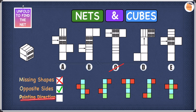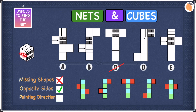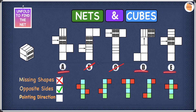In terms of pointing directions, the arrow on the cube is pointing towards the window shape. So if we find an option where the arrow is not pointing towards the window shape, we cross it off. In A the arrow is pointing towards the window shape, so that's fine. In B the arrow is pointing towards the stripy pattern, even though it's meant to point towards the window. So we cross off B, and we're now left with A, D, and E.